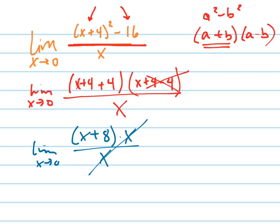Well, the x's cancel, so it's just the limit as x goes to 0 of x plus 8, which is just 8.